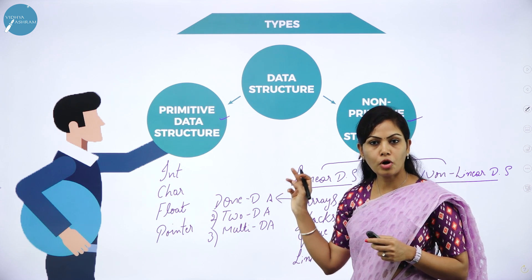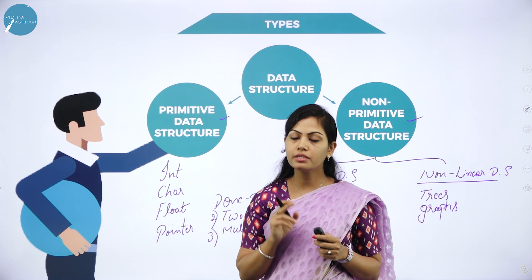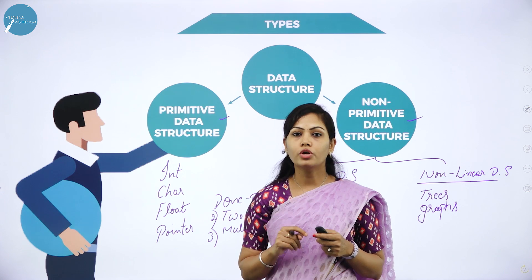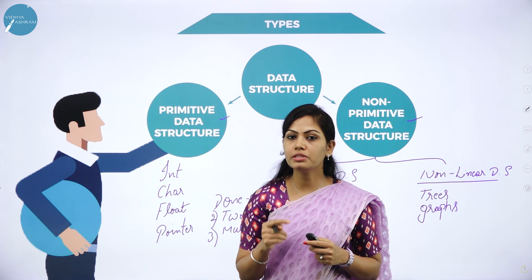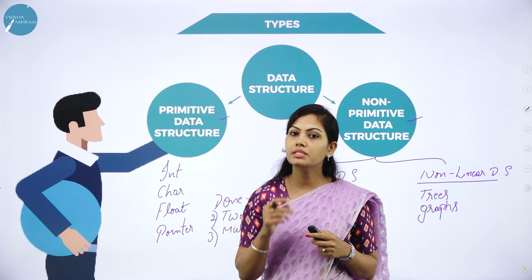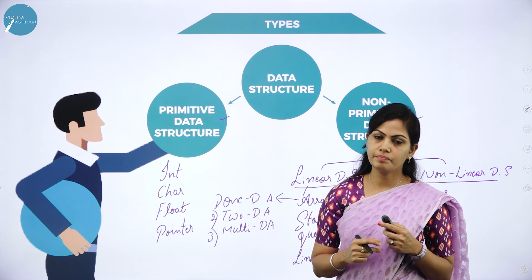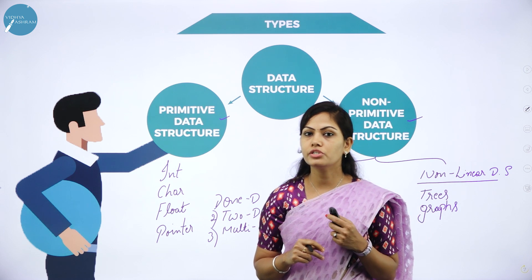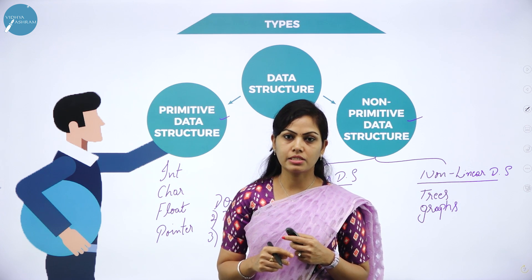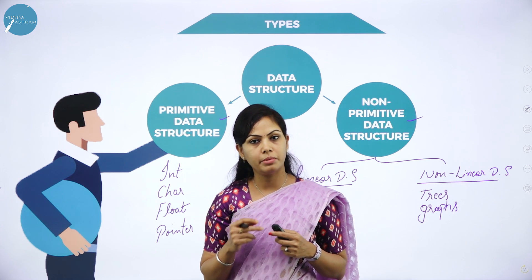Some operations can be performed on data structures: searching, sorting, insertion, and deletion. Searching means finding an element in a data structure. Sorting means arranging elements in ascending or descending order. Insertion means adding an element into the data structure, and deletion means removing an element from the data structure.